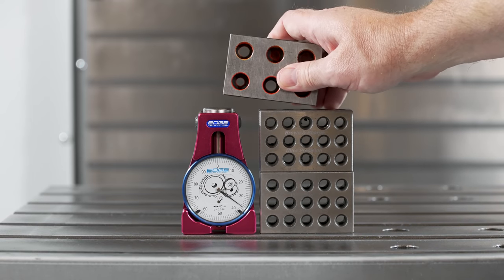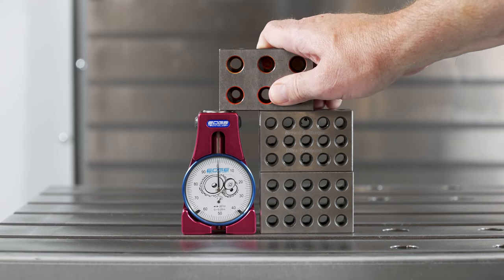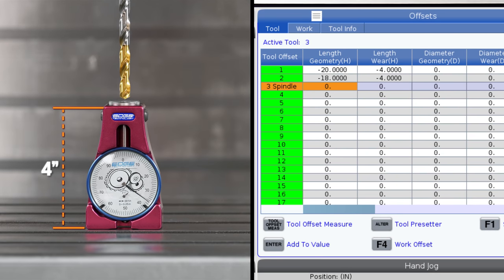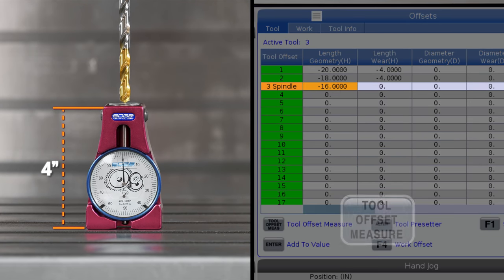This tool setter from Edge Technology is four inches tall and can be calibrated with a few one-two-three blocks. When the dial reads zero, our tool is four inches from our table, so after we press tool offset measure we can shift our offsets down by four inches so our tool is effectively set right on the table.